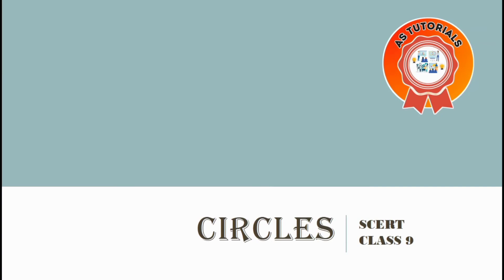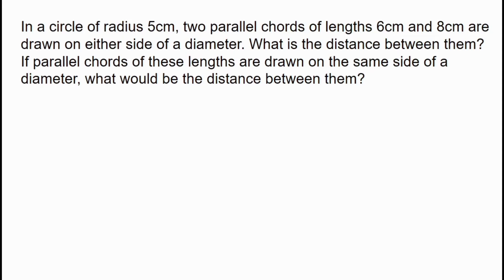Hi, welcome back to our YouTube channel. In a circle of radius 5 cm, two parallel chords of length 6 cm and 8 cm are drawn on either side of a diameter. What is the distance between them? If parallel chords of these lengths are drawn on the same side of the diameter, what would be the distance between them?